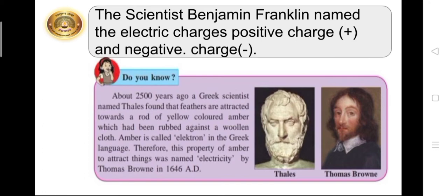Now come to page number 53 of your textbook. See the box, Do you know? About 2500 years ago, a Greek scientist named Thales found that feathers are attracted towards a rod of yellow-colored amber, which had been rubbed against a woolen cloth. Amber is called electron in the Greek language. Therefore, this property of amber to attract things was named electricity by Thomas Browne in 1646 AD. You can see the pictures of Thales and Thomas Browne.